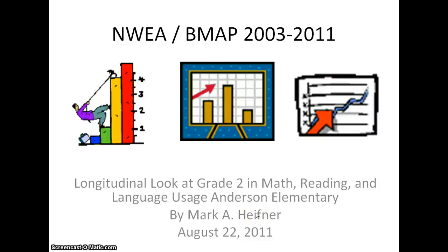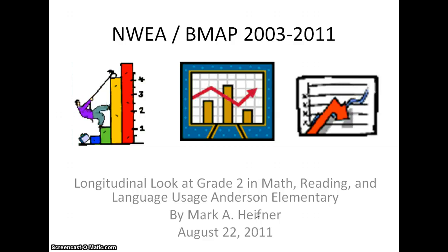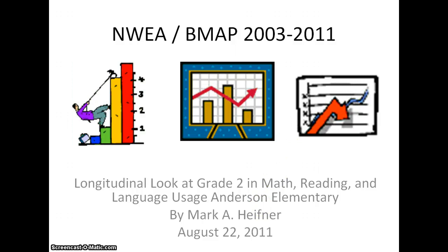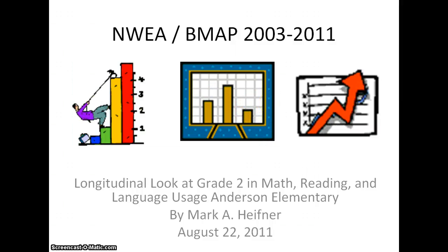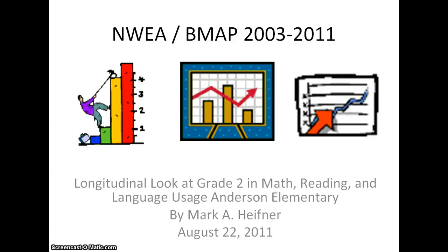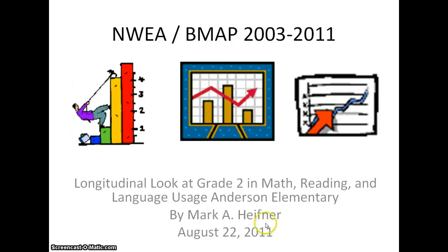Welcome to this short presentation about the NWEA, Northwest Evaluation Association, or what we call BMAP in Brunson, for the Brunson Measures of Academic Progress. We've been using this assessment since 2003. My name is Mark Hiefner. I'm the principal at Ryan Elementary School and Chicago Street School.